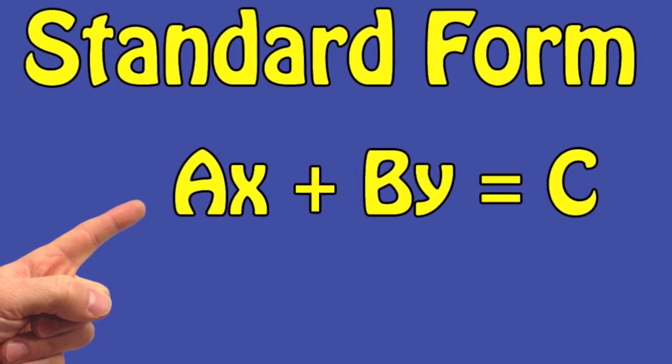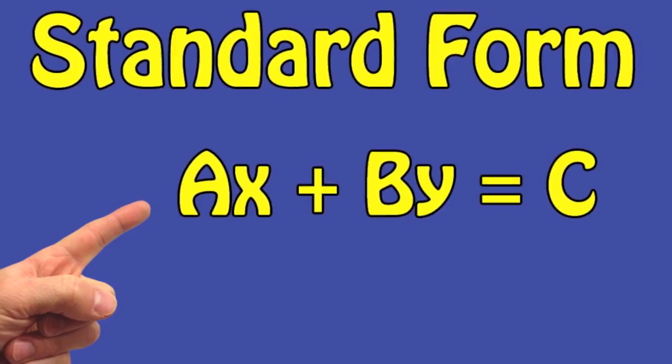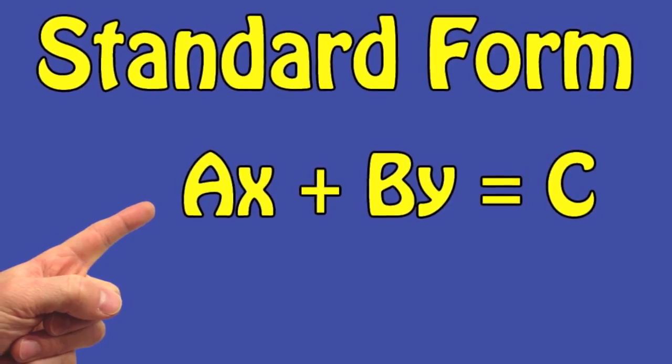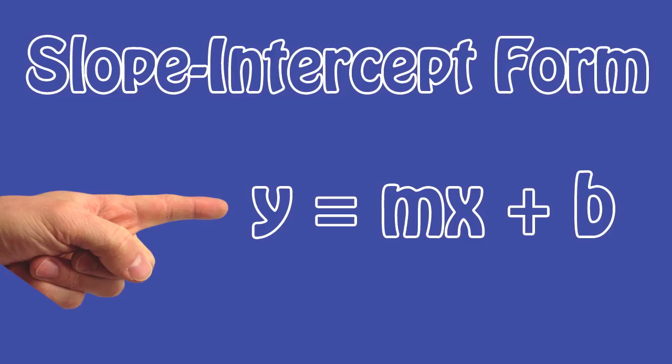We've got standard form. AX plus BY equals C, slope-intercept form.